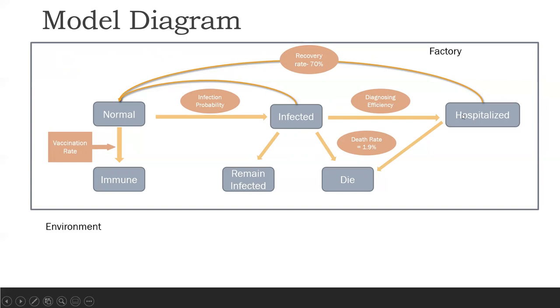One is the stage of hospitalizing, defined by the diagnosing efficiency set as a parameter. If not, they could either die or remain infected. A person hospitalized has a chance of recovering, which is 70%. The rest of the 30% can remain hospitalized, or some of them, which is 1.9%, will eventually be dying. This 1.9% death rate means the usual death rate recorded within Sri Lanka from the COVID-19 cases reported.